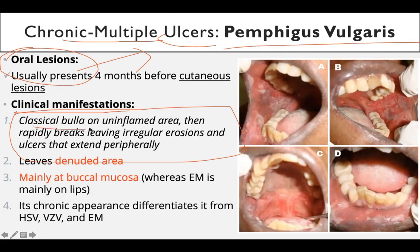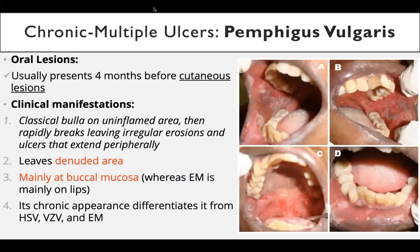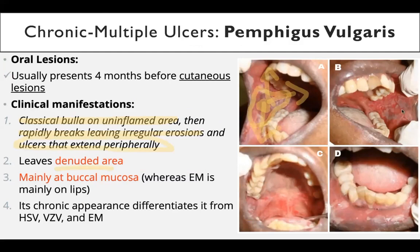The clinical manifestation, shown in italicized form, indicates the progression of the lesion. Classical bulla on an un-inflamed area — un-inflamed means no redness, no swelling, no pain — then rapidly breaks leaving irregular erosions. So we have classical bulla on un-inflamed area, then it rapidly breaks leaving irregular erosions and ulcers that extend peripherally.